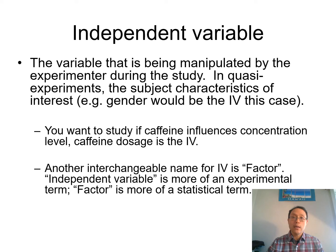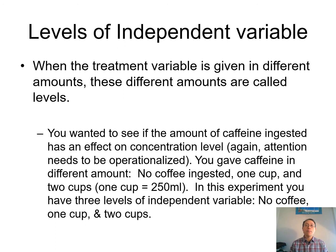Now let's look at the independent variable. Let's talk about the levels of the independent variable — this is the treatment that varies in amount, and these differences in amounts are called levels. For example, if you wanted to see if the amount of caffeine ingested has an effect on concentration level, you can give caffeine in different amounts: no coffee, one cup of coffee, and two cups of coffee. In this experiment you basically have three levels of the independent variable.